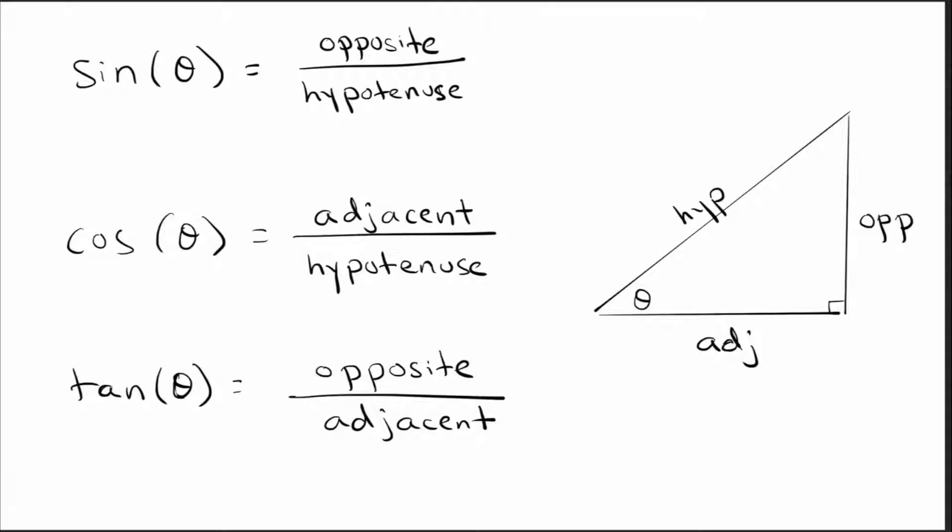We don't care about what the opposite side divided by the hypotenuse is, and so forth. We use sine, cosine, and tangent for other reasons. So in this video, we'll quickly and easily explain why do we care about sine, cosine, and tangent. Let's go ahead and get started.